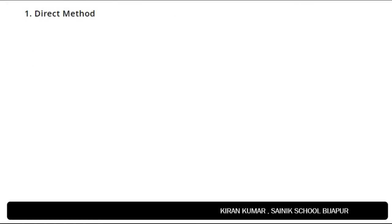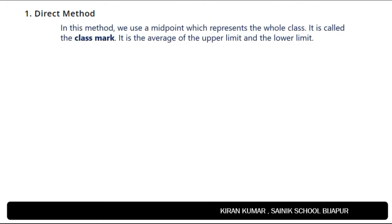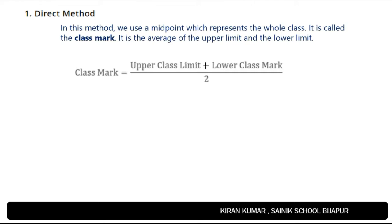First, let us look at the direct method. In this method we use a midpoint which represents the whole class — it is called the class mark. It is the average of the upper limit and the lower limit. The class mark is given by: upper limit plus lower limit divided by 2. The mean is represented as x-bar, which is equal to sigma(fi × xi) divided by sigma(fi).